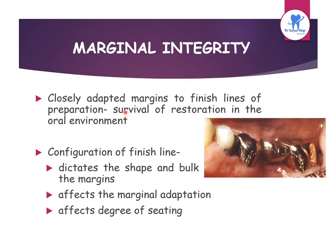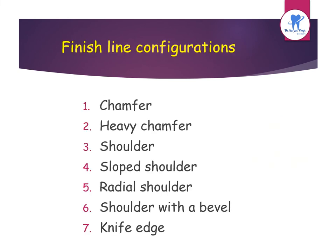Regarding marginal integrity, a restoration can survive in the biologic environment of the oral cavity only if the margins are closely adapted to the cavosurface finish line of the preparation. Finish line configurations dictate the shape and bulk of the margins, affect marginal adaptation, and affect the degree of seating. Configurations include: chamfer, heavy chamfer, shoulder, sloped shoulder, radial shoulder, shoulder with bevel, and knife edge.